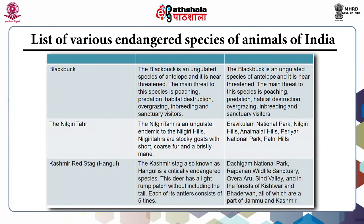The Kashmiri Red Stag, also known as Hangul, is a critically endangered species. This deer has a light rump patch not including the tail, and each of its antlers consists of five tines. This animal is found in Dachigam National Park, Rajparian Wildlife Sanctuary, Overa-Aru, Sindh Valley, and the forests of Kishtwar and Bhaderwah, all of which are parts of Jammu and Kashmir.